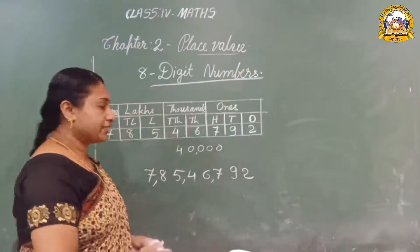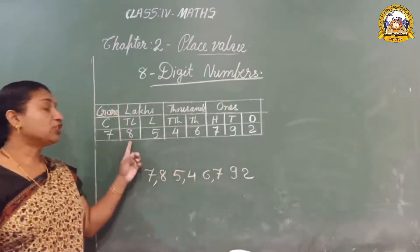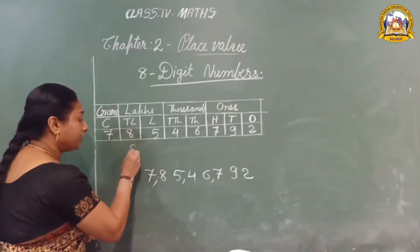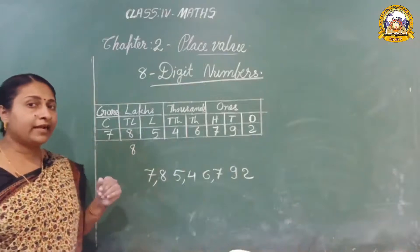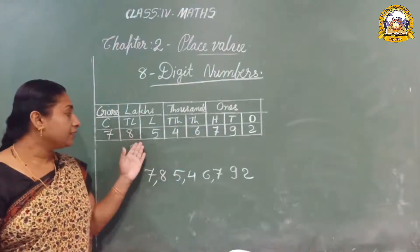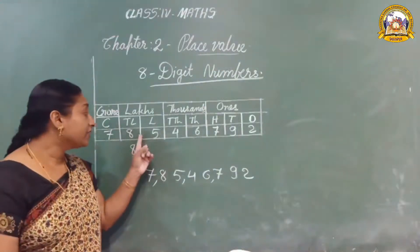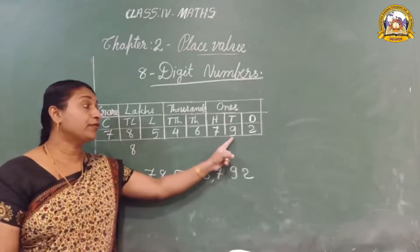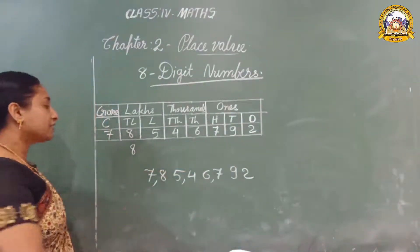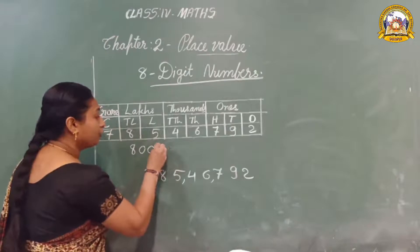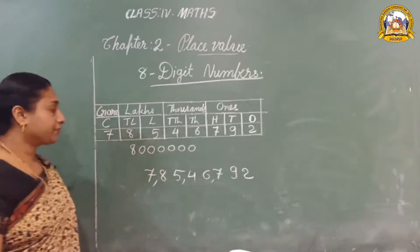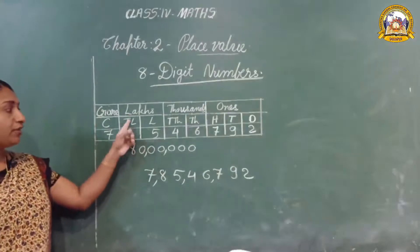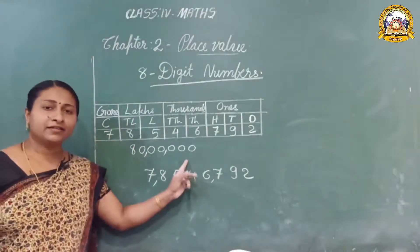I shall give one more example. If we want to find the place value of eight in this number, write the eight and then count how many digits are there after this digit: one, two, three, four, five, six — give six zeros. One, two, three, four, five, six. How can we read it? Eighty lakh. Eight into ten-lakh is eighty lakh. It is easy!